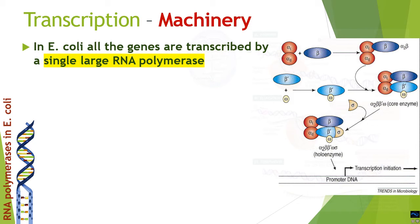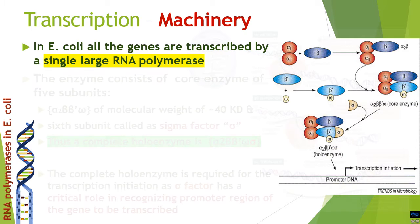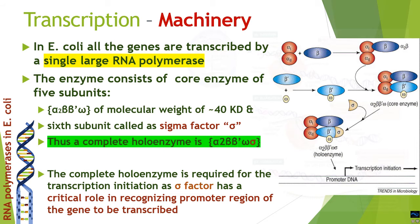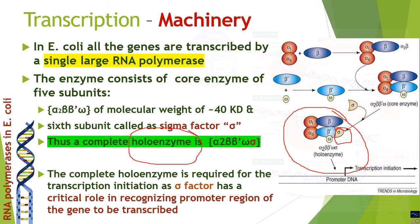The machinery needed for transcription is the DNA-dependent RNA polymerase. In E. coli, the simplest prokaryote, a single large polymerase transcribes all genes. This polymerase is a multimeric complex of five core subunits — alpha-2, beta, beta-prime, and omega — weighing around 400 kilodaltons. A sixth subunit, the sigma factor, associates with the core to form the functional holoenzyme. The sigma factor is important because it helps the holoenzyme recognize a specific site called the promoter region.